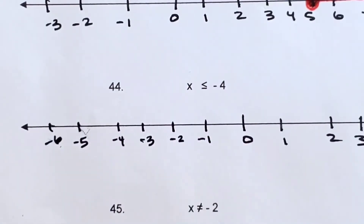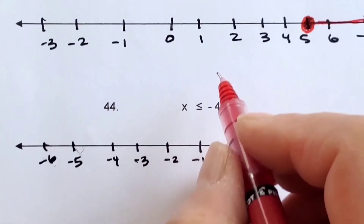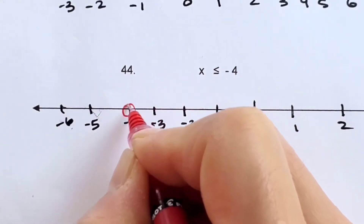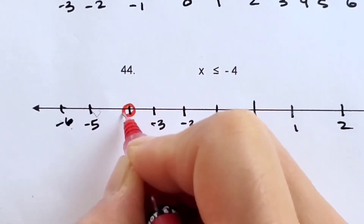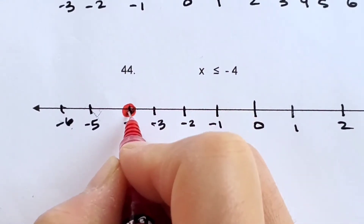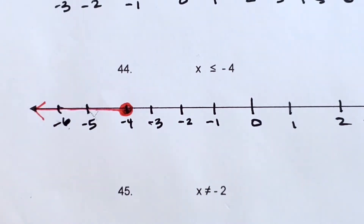Number 44: x is less than or equal to negative 4. Find negative 4 on your number line. It's equal to negative 4 as well, so you're going to have a closed point. And everything less than — to the left — with an arrow.